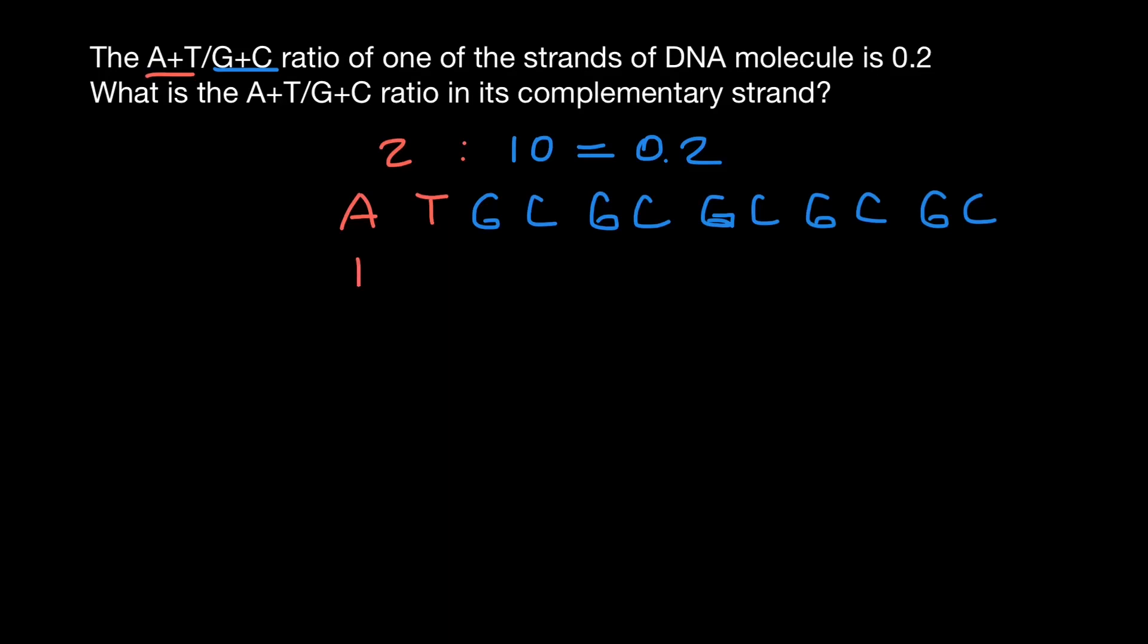So adenine base pairs with thymine, thymine base pairs with adenine, and guanine base pairs with cytosine. Guanine here, cytosine, guanine, cytosine, guanine, cytosine, guanine, cytosine, guanine. Again, we see the same 2 to 10 ratio on the complementary strand of the DNA.